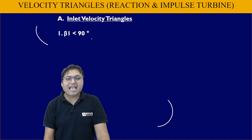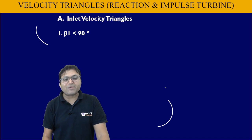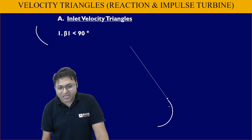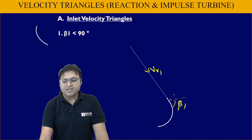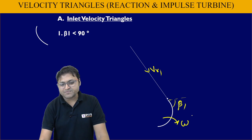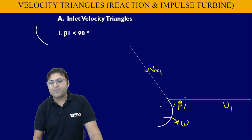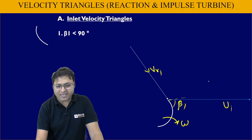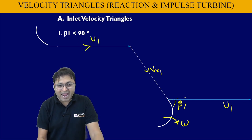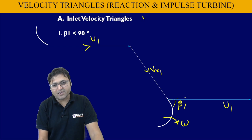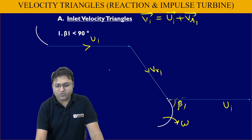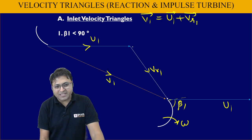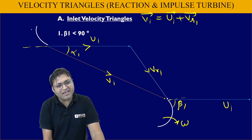When blade angle β1 is less than 90 degrees, the tangent to the rotor blade gives Vr1. This angle is β1. Because the rotation is clockwise, U1 will be in the positive x-direction. The resultant of U1 plus Vr1 is V1. This angle is α1, the guide vane angle.